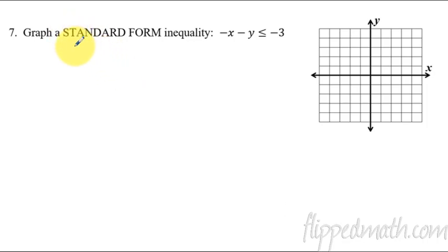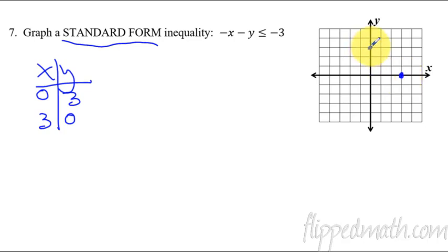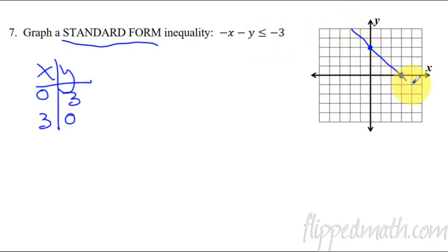Next is example number 7 — we're going to graph in standard form. You could do this with an x-y t-chart: if x is 0, y would be 3; if y is 0, x would also be 3. So you get points (0,3) and (3,0), connect them. Another way I like: solve for y, get y by itself. Is this solid or dashed? Solid line. So we get a solid line.